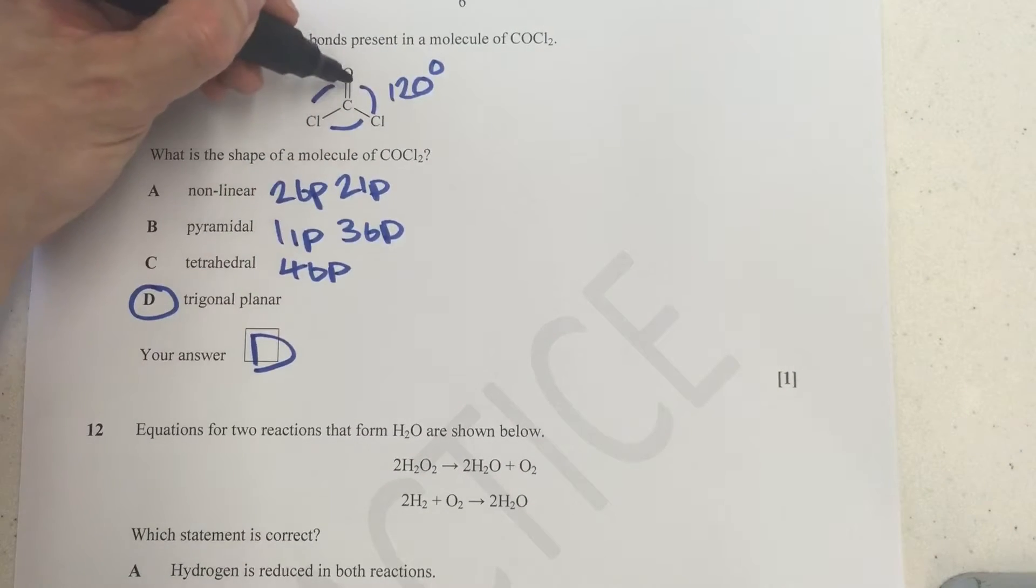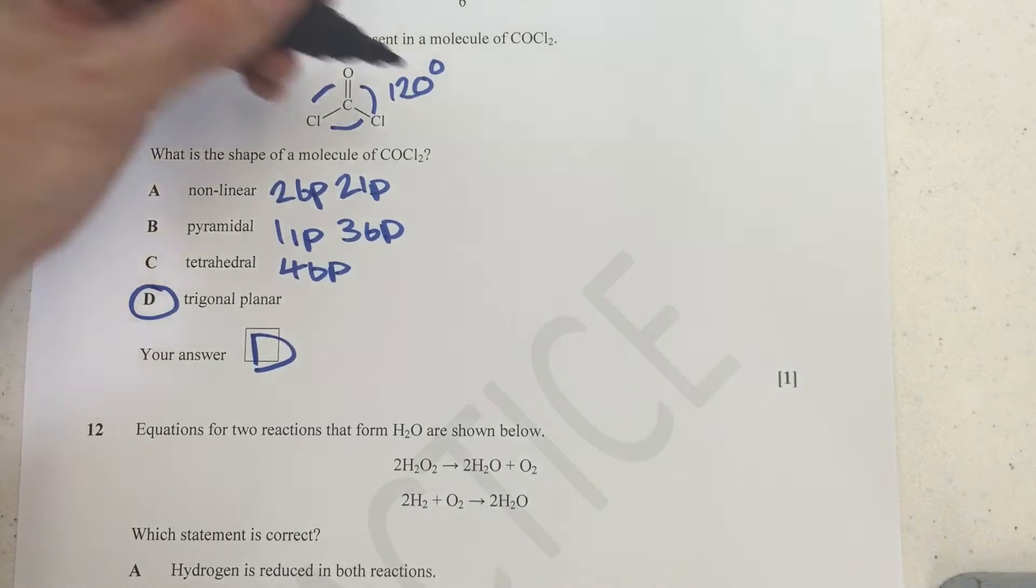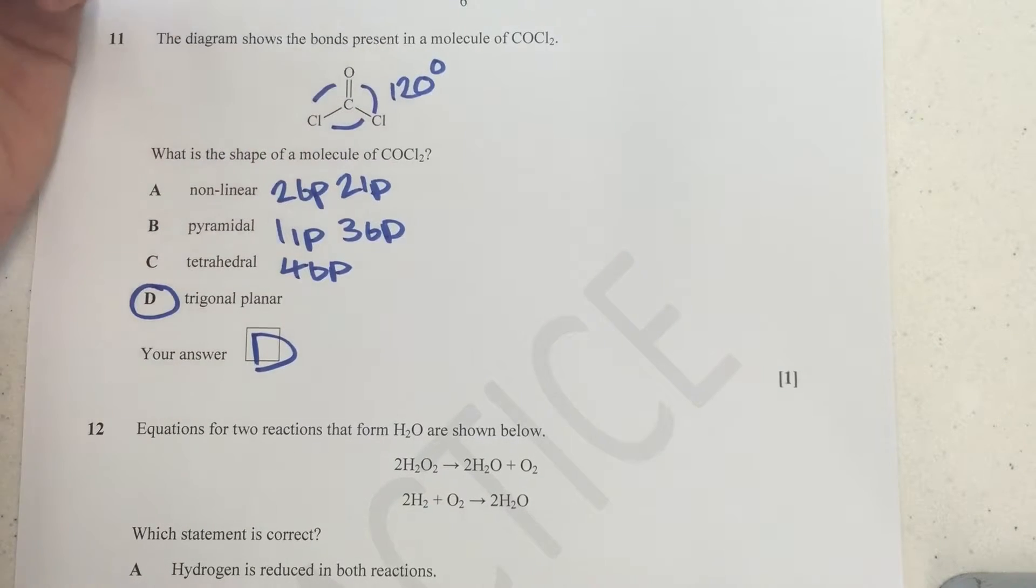Now here we have actually got a double bond, but look at the arrangement here. You should know that the angles around a carbonyl group, so this is aldehydes, ketones, and carboxylic acids in year one, but it also extends to the acyl chlorides, amides, and esters in the upper six. You should know that this is 120 degrees around there, so it is going to be D.